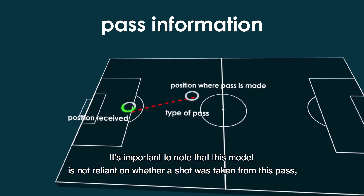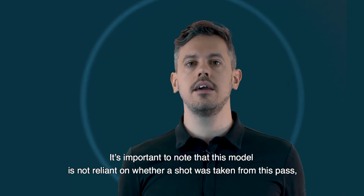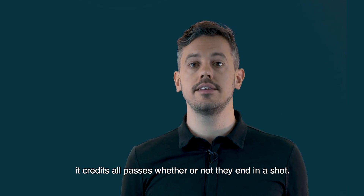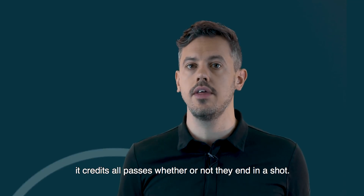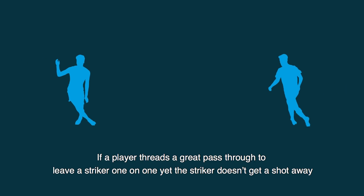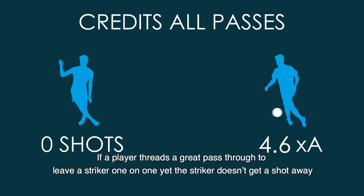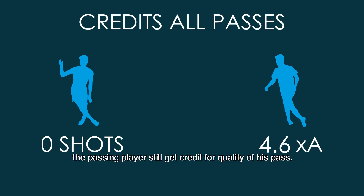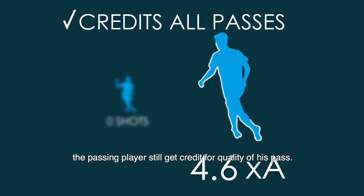It's important to note that this model is not reliant on whether a shot was taken from a pass — it credits all passes whether or not they end in a shot. If a player threads a great pass through to leave a striker one-on-one yet the striker doesn't get a shot away, the passing player still gets credit for the quality of his pass.